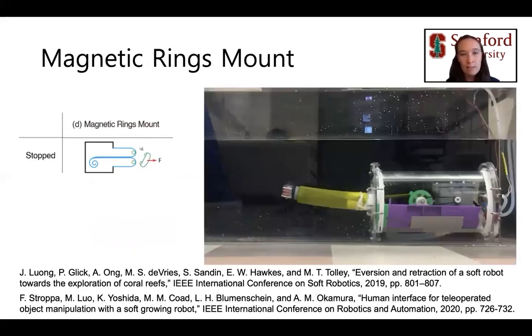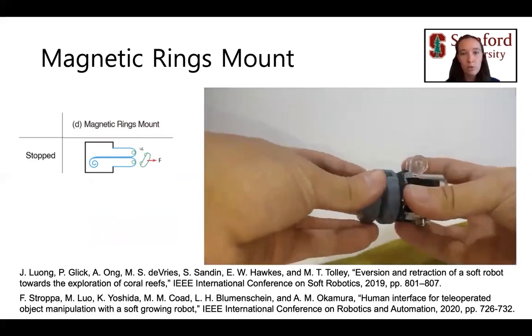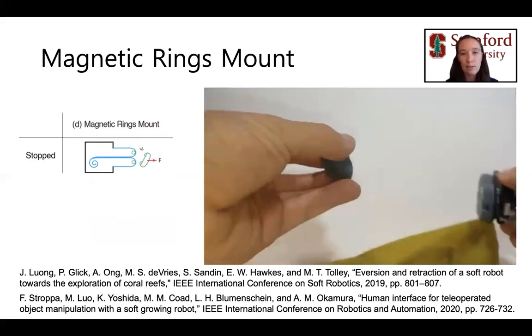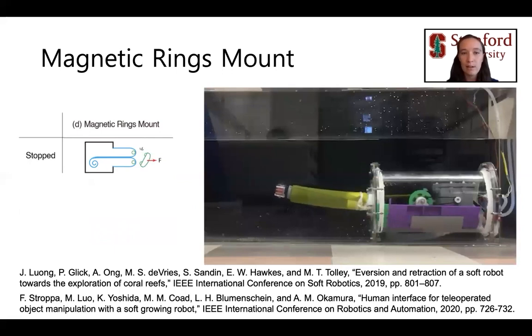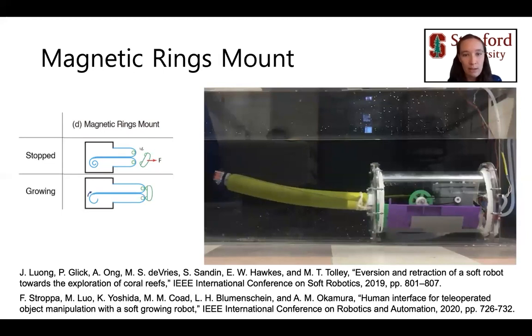Finally, the magnetic rings mount design consists of two rings that attract each other using magnetic rollers, one inside the pressurized area and one outside the robot tip. This allows the robot material to pass between the two rings in a low friction manner. This design remains at the robot tip during growth and retraction, but its pulling forces are limited by the strength of the magnets used.